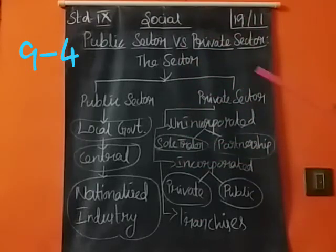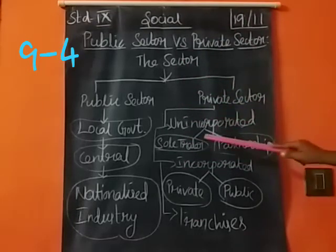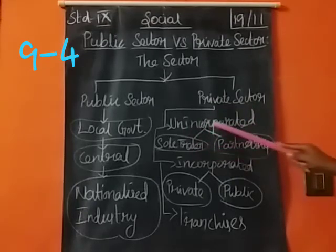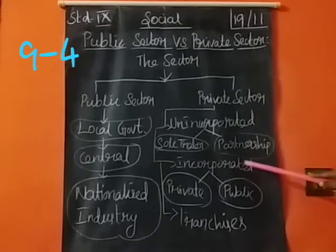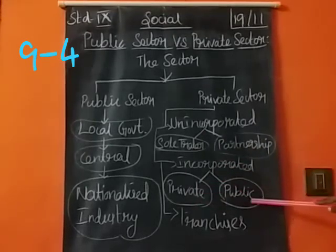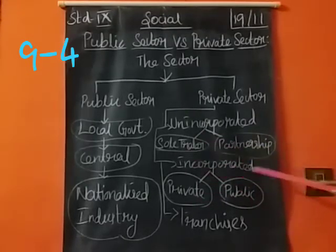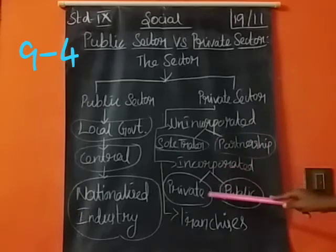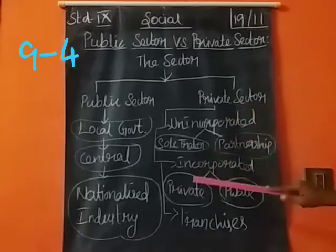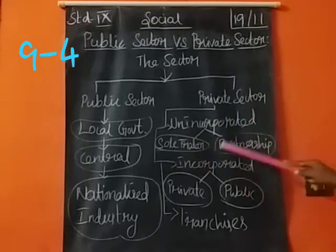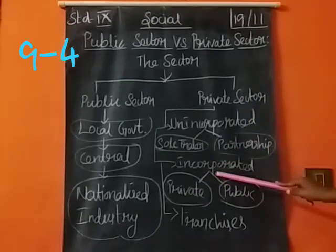These three form the public sector. The private sector is unincorporated, which is divided into two — one is sole trader and the next is partnership — and then incorporated, which includes private and public companies. Both public company and private company participate in the incorporated sector.